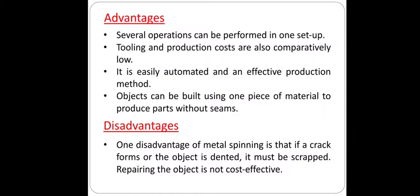The advantages of metal spinning include: first, several operations can be performed in one setup; second, tooling and production costs are comparatively low; third, it is easily automated and an effective production method; and fourth, objects can be built using one piece of material to produce parts without seams.